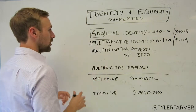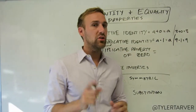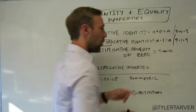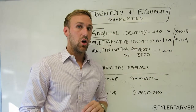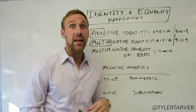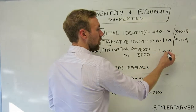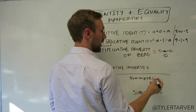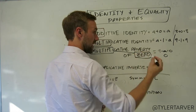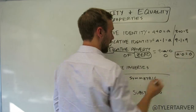Next we've got the multiplicative property of zero. What happens when you multiply something times zero? Say we've got nine times m equals zero — what does m have to be? The only thing you can multiply a number by and get zero is zero. So the multiplicative property of zero: a times zero equals zero.